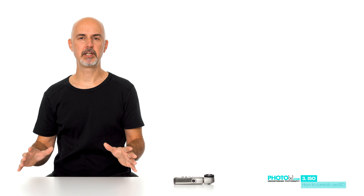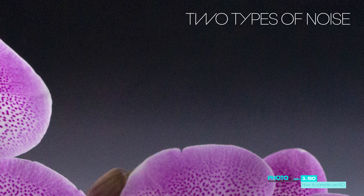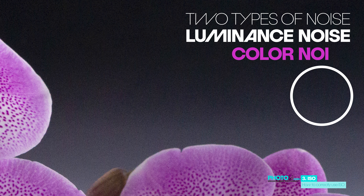That's a good opportunity to take a closer look, because we see two different types of noise. There is luminance noise, where the brightness between neighboring pixels is different. And then there is color noise, where there is also a color difference between those pixels.